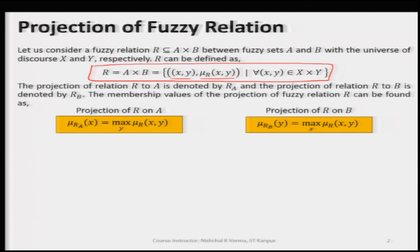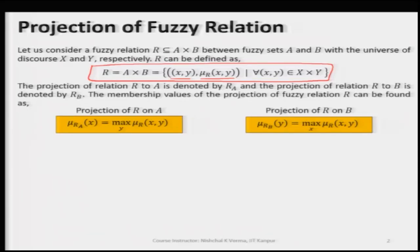Here, R is defined as A cross B, and A cross B is in terms of X and Y — the universe of discourse X and Y. So the Cartesian space we have is capital X cross capital Y. Now let us discuss the projection of fuzzy relation. A fuzzy relation is a multi-dimensional fuzzy set, defined on multiple universes of discourse like X and Y, or even further like X, Y, Z and so on.